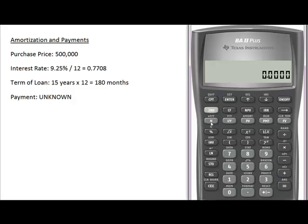I'm going to begin to work across on my time value of money keys. N is the term of the loan, or the number of payments, which is going to be 180 months.